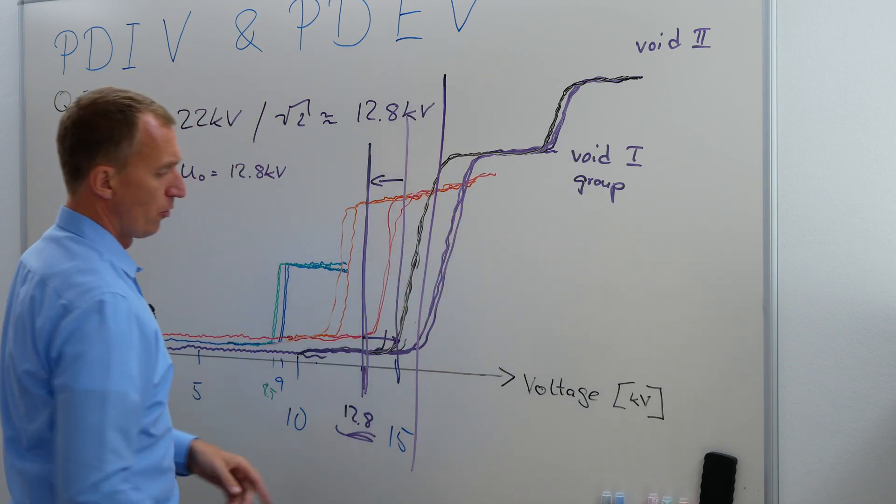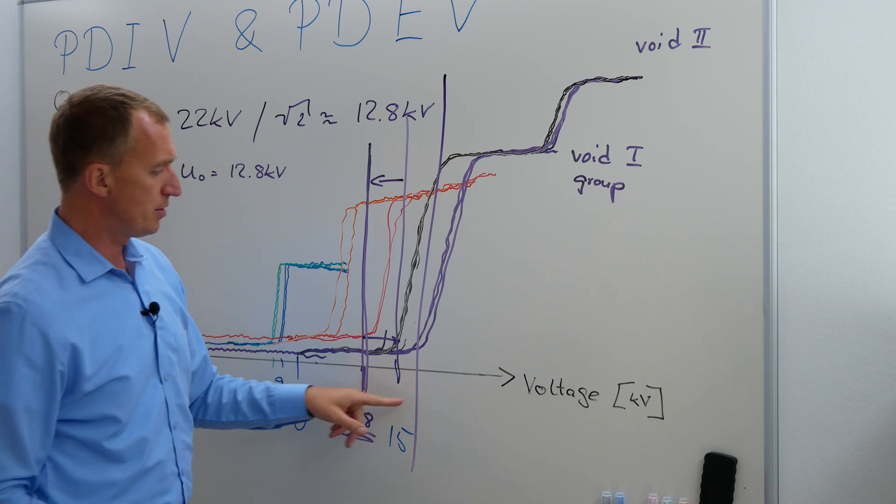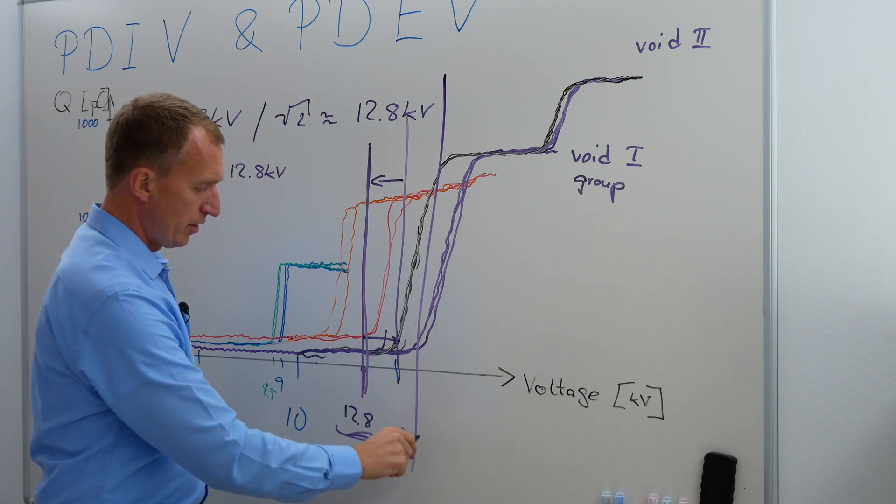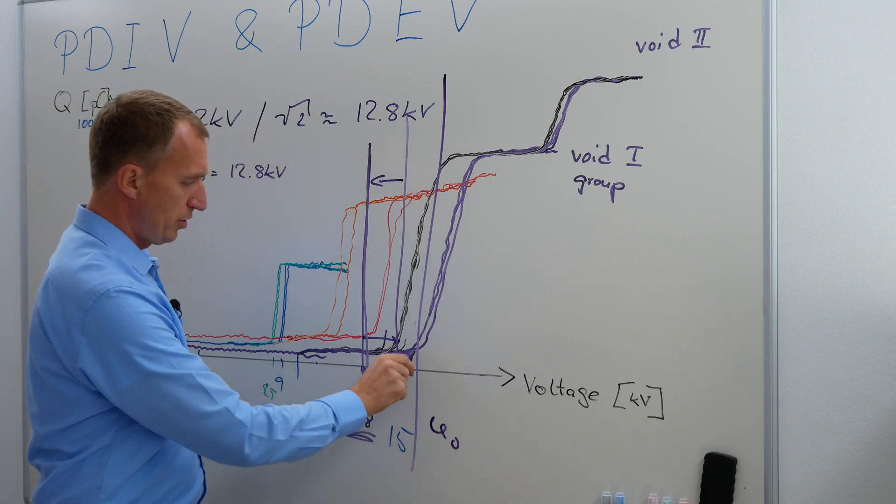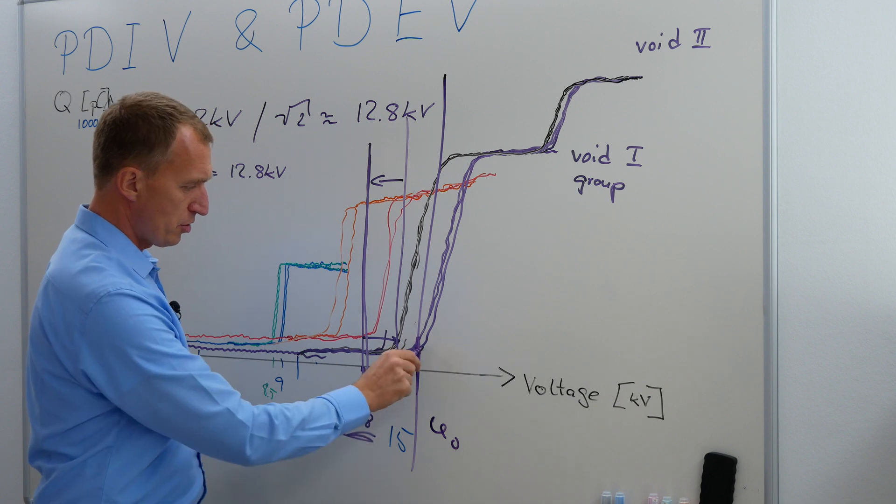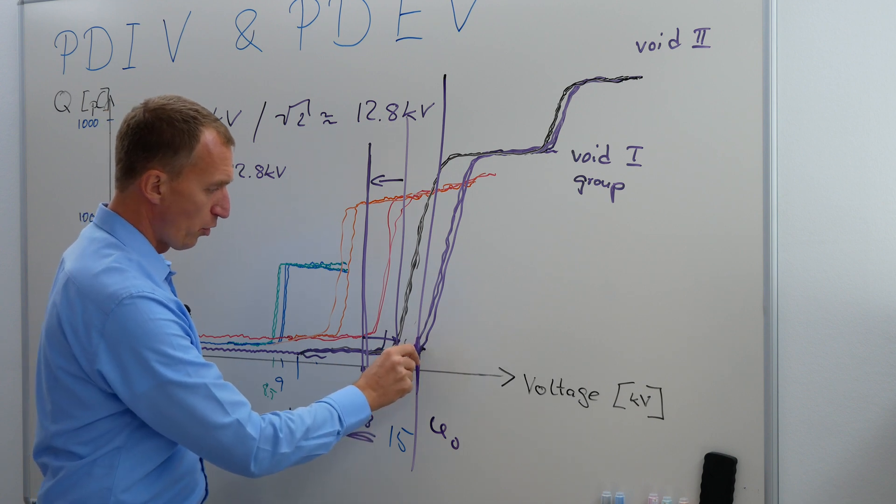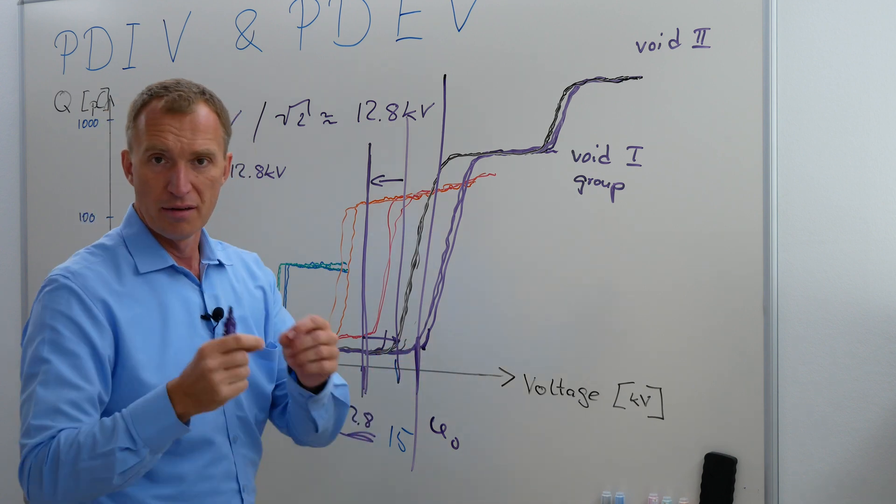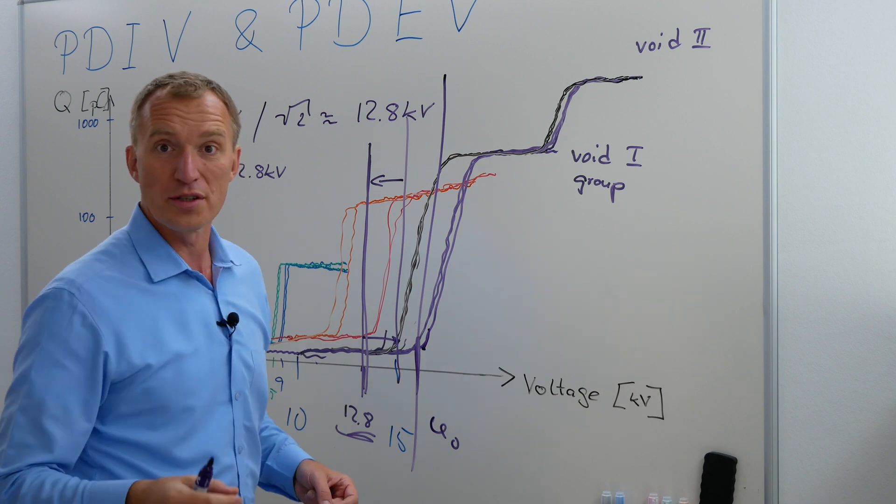Imagine that the voltage where you're working is here. So, if this would be our U0. So, here, we don't see any partial discharges because, unfortunately, the voids start here, just like a couple of volts afterwards.